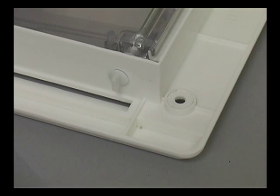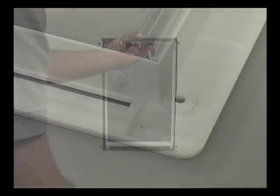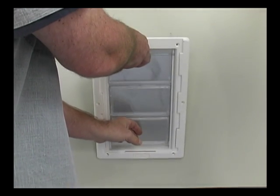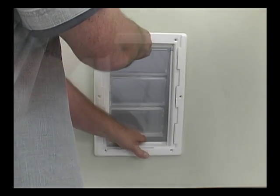Make sure the tab on the cap is at the same angle as shown here. If it is not level, it may not fit back into the outside frame. The final step is to reinstall the pet door into the opening.